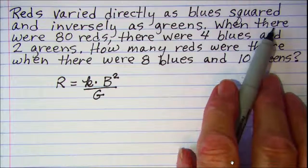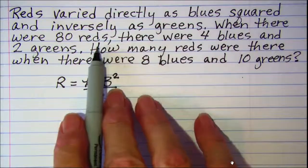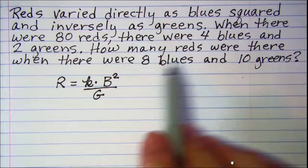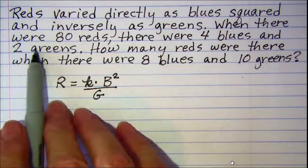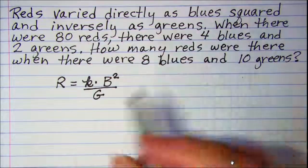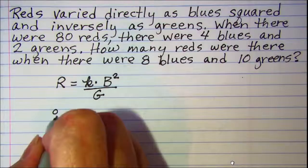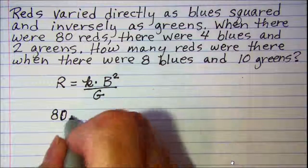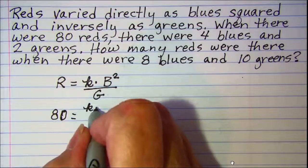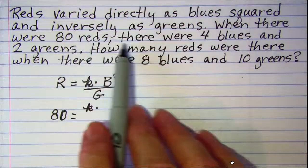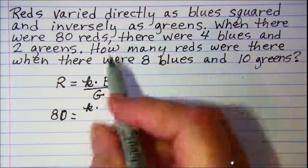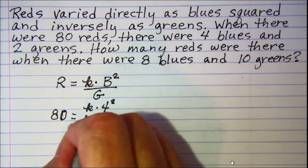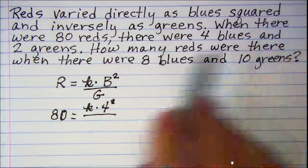My next sentence gives me some values that I can plug into this equation so that I can find the value of K. It says when there were 80 reds so 80 is going to be substituting for R. I don't know K yet so I leave it K. There were 4 blues so I'll have 4 squared. And 2 greens.